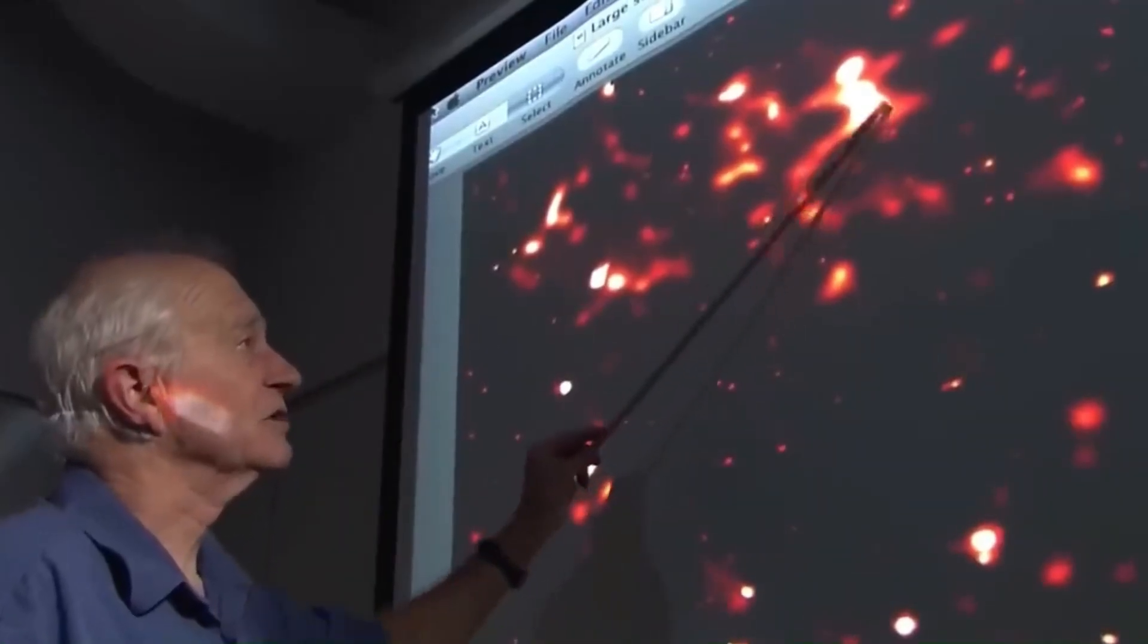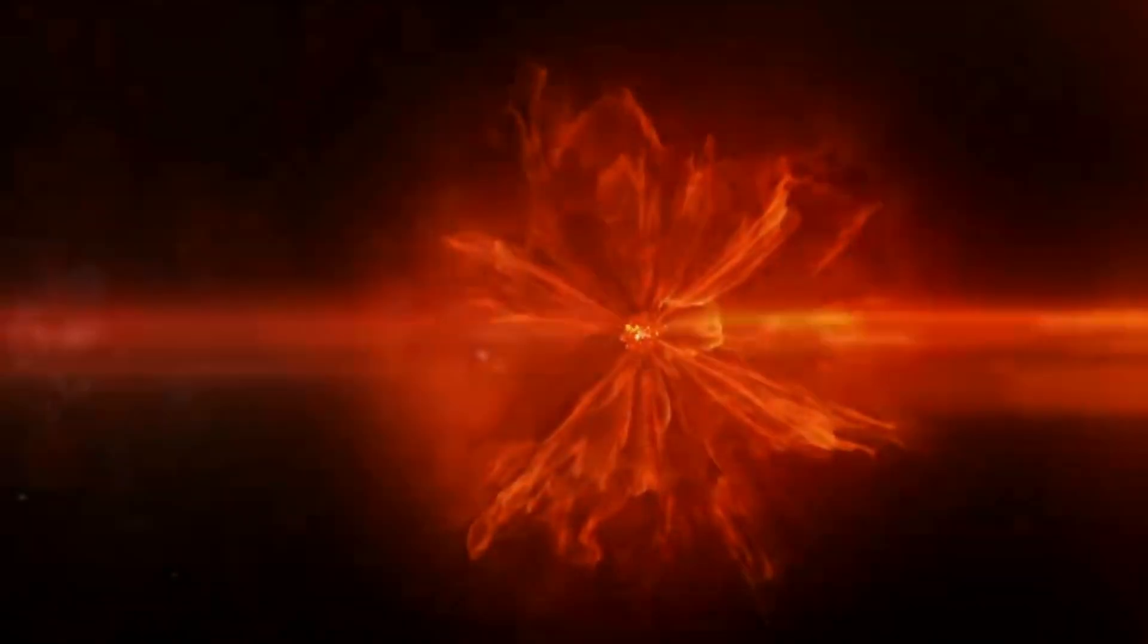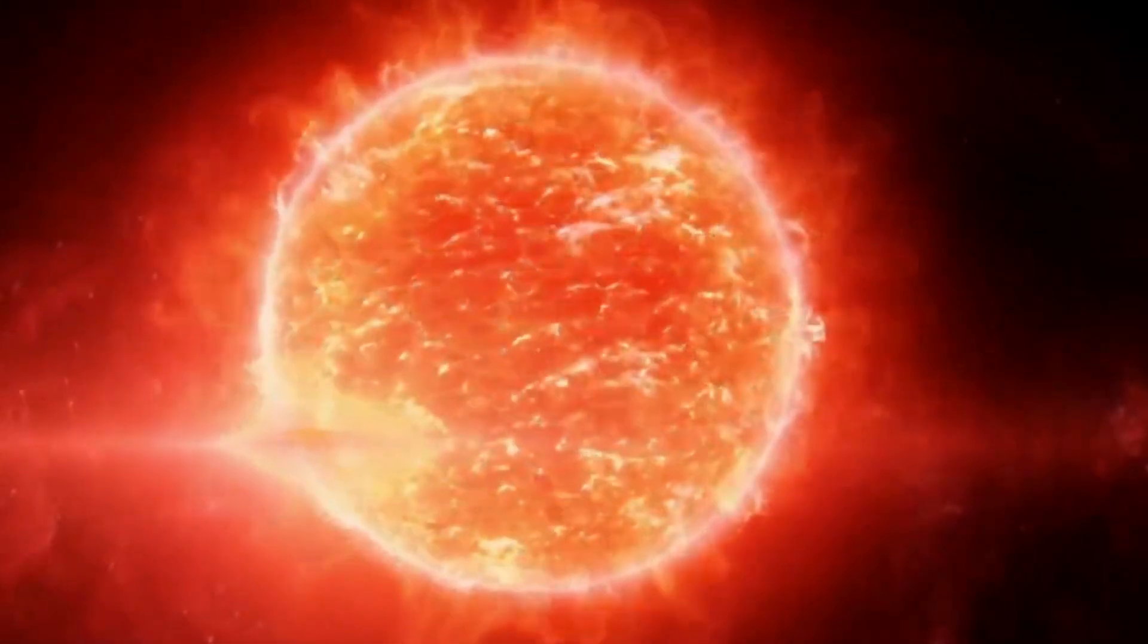It's thought that Betelgeuse, which has 15 to 20 times the mass of the Sun, will end its life in a huge supernova explosion. Its red color shows that it's a red supergiant that's nearing the end of its life. But no one knows what will happen in the end. At some point, the star Betelgeuse will explode as a supernova. Then it could get as bright as a full moon and be easy to see during the day.